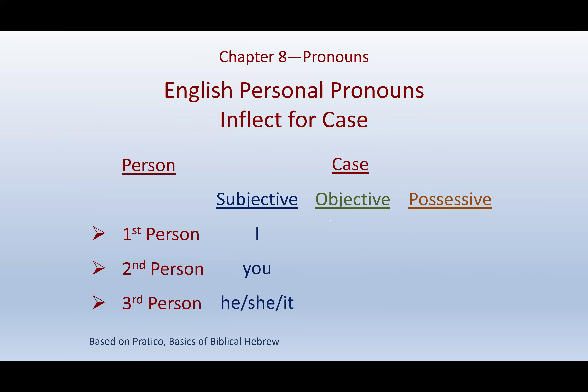For the subjective case, if the pronoun is the subject: I, you, he, she, it. If it's the object: 'she gave a card to me' — that's objective. 'You' stays 'you'; 'him' or 'her' for third person. That's the objective case. And the possessive case: my, your, and his, her, or its. So they inflect for case.